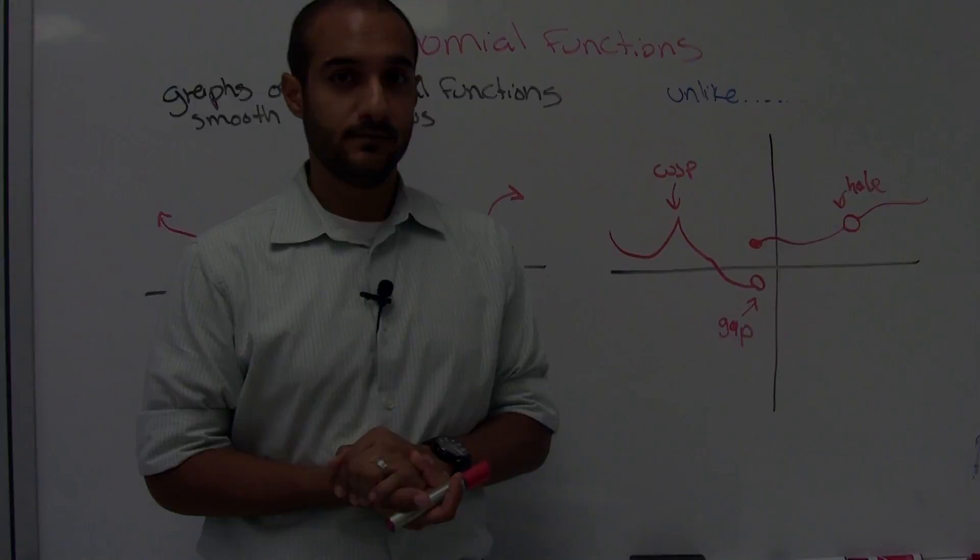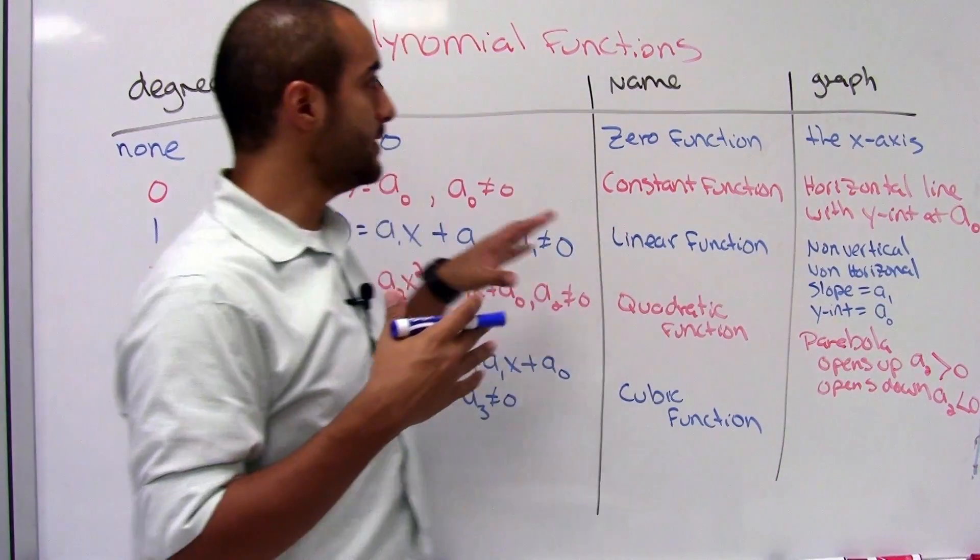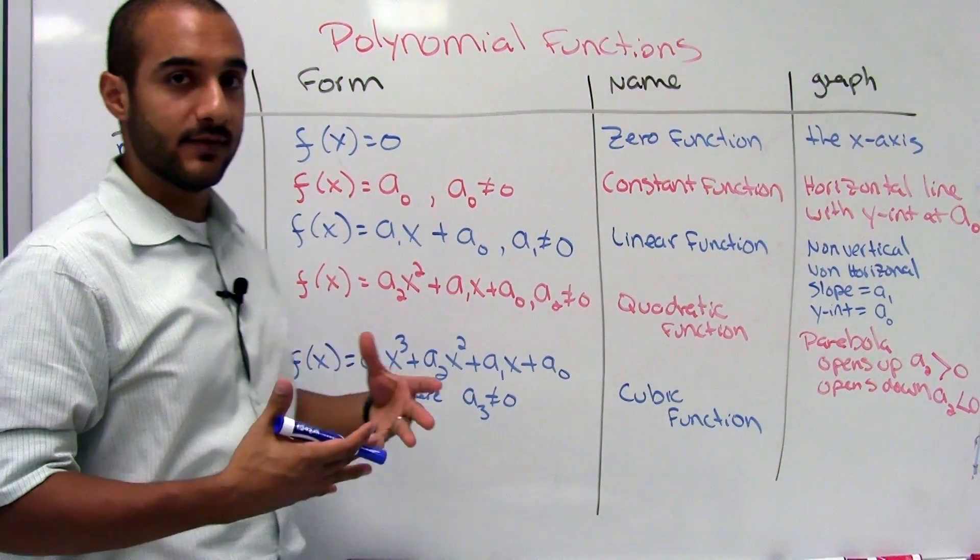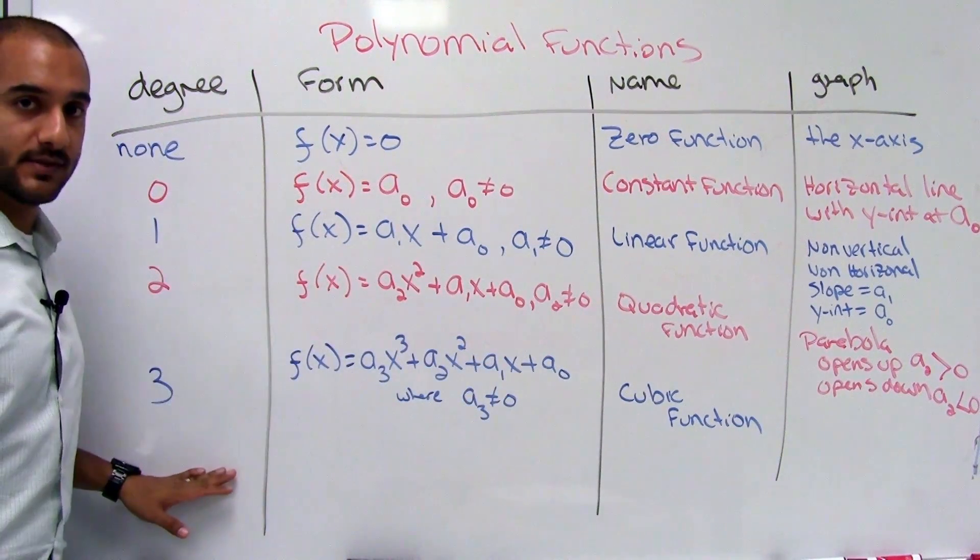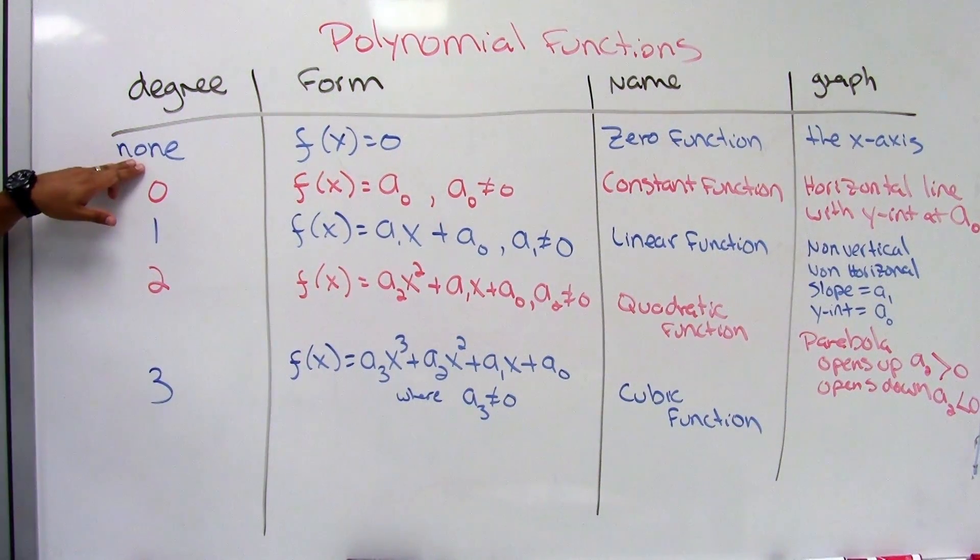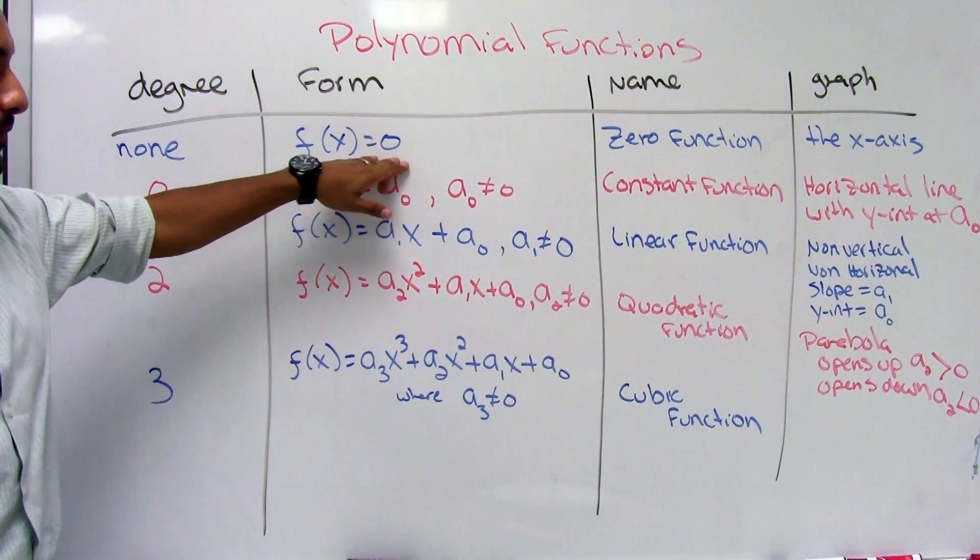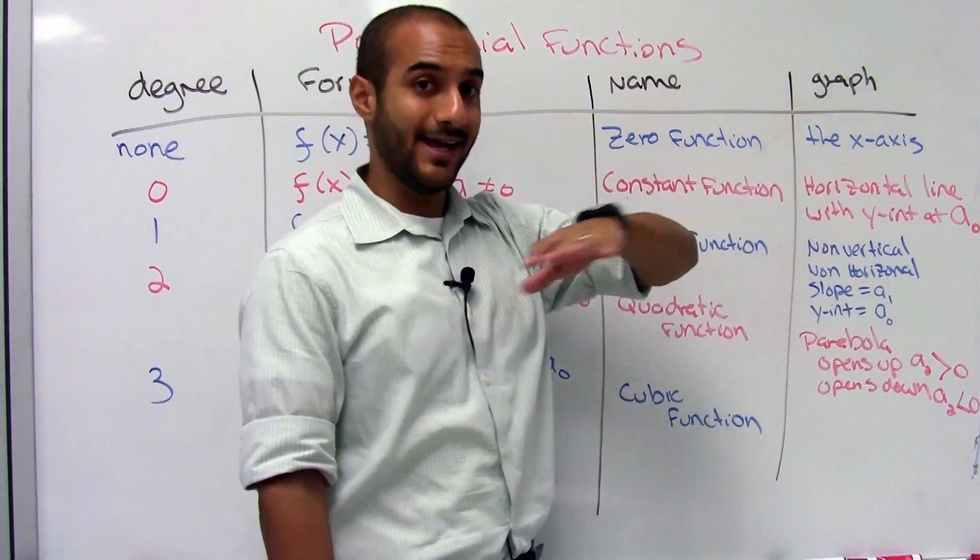So let's look at some more stuff. Alright, you should have these functions memorized by now. If you haven't, or you didn't write it down in your class, go ahead and copy this table down. So the first function we'll look at is one that has no degree. And it will look like this, f of x is equal to zero. This is called the zero function and it actually graphs the x-axis.